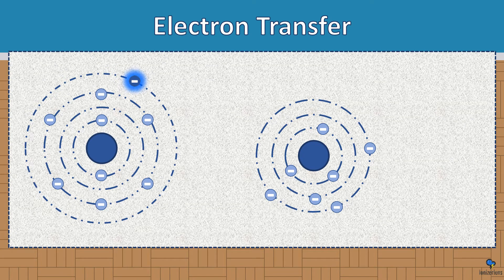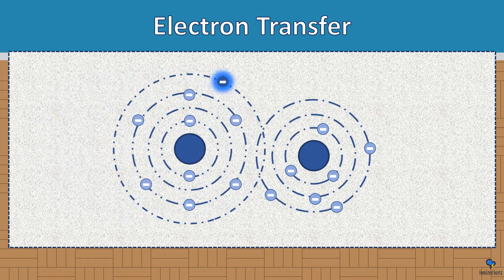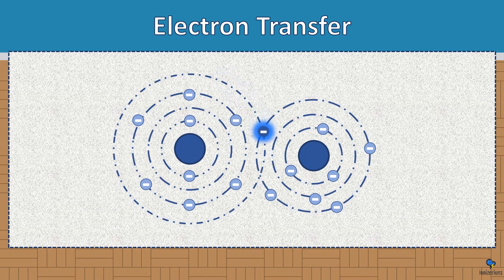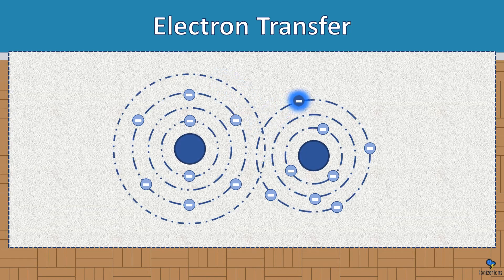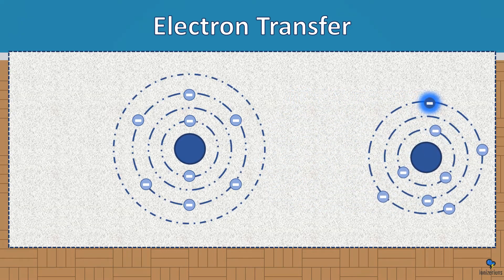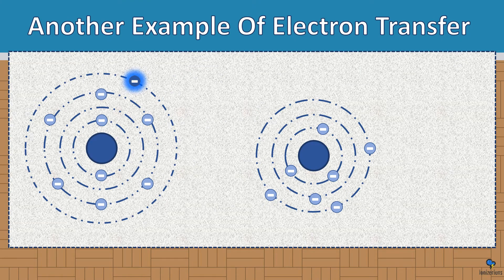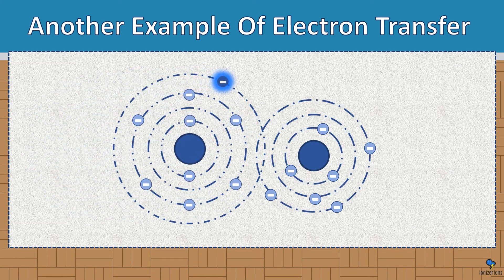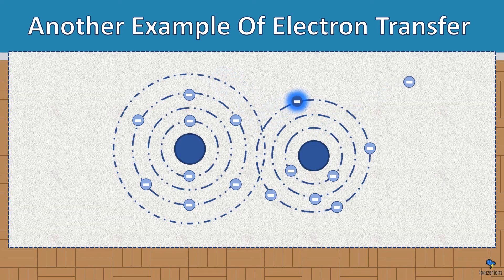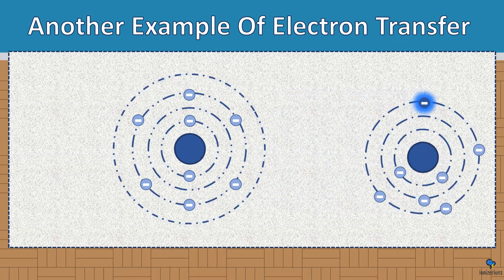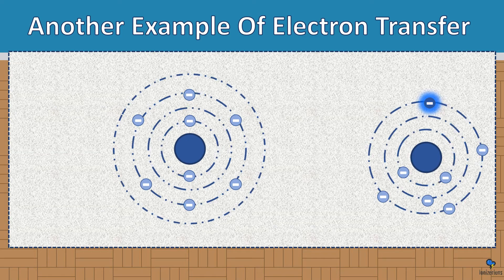Here is an example of electron transfer. The first molecule is an ion; it gives the second molecule its extra electron, and now the second molecule becomes an ion. In another example, the first molecule is an ion and gives the second molecule an electron, but one electron bounces off. Sometimes this happens — a lot of this is theory. We really don't know exactly what electrons do in these subatomic molecules; we just have theories.